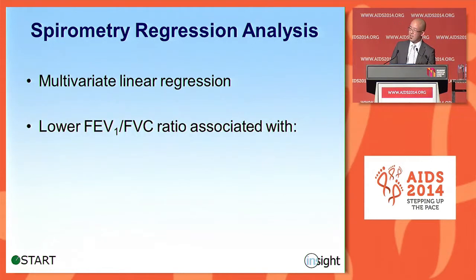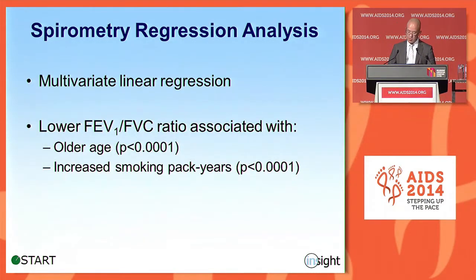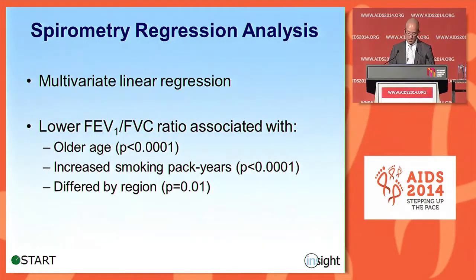To understand whether it was region, smoking, and/or age driving the COPD we observed, we conducted multivariate linear regression with FEV1/FVC ratio as the dependent variable. We found that older age and pack-years of smoking had the strongest associations with lower — i.e., worse — FEV1/FVC ratio. Gender did not have an effect, but the regions had significantly different beta coefficients. This variability by region could potentially be related to other non-smoking exposures, things like biomass fuel exposures or occupational dust and smoke exposures. Unfortunately, we didn't collect such data, but we are currently in discussions about how we might collect that data going forward, particularly for sites in the developing world.